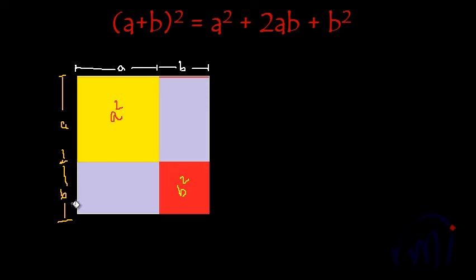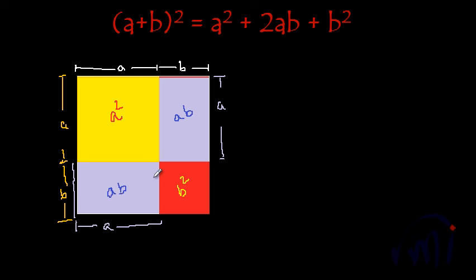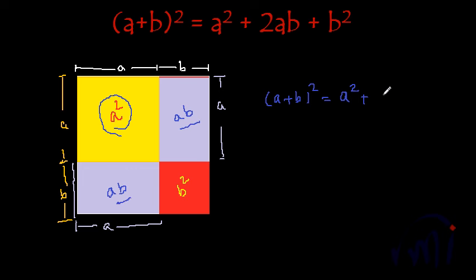And the blue square's area will be equal to b multiplied by b, that is b square. And then we have these two rectangles of the dimension a by b and a by b. The width of the first rectangle is equal to b and its length is equal to a. This rectangle also has its width equal to b and its length equal to a. So the area of these two rectangles will be a multiplied by b and a multiplied by b — that is ab and ab. So the area of a square whose one side is equal to a plus b will be a plus b whole square, and this is equal to a square plus 1ab and 1 more ab, that is 2ab, plus b square.